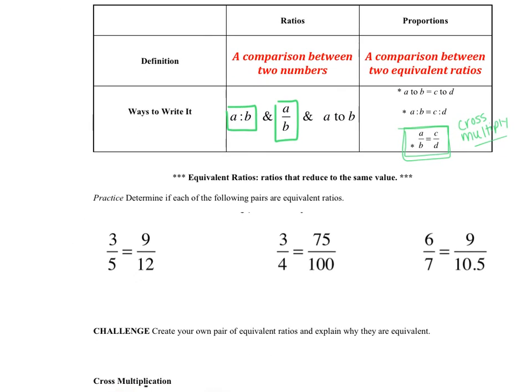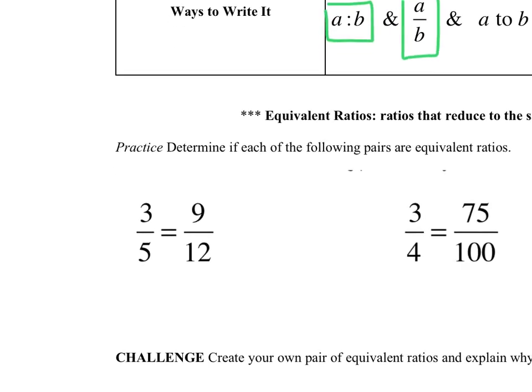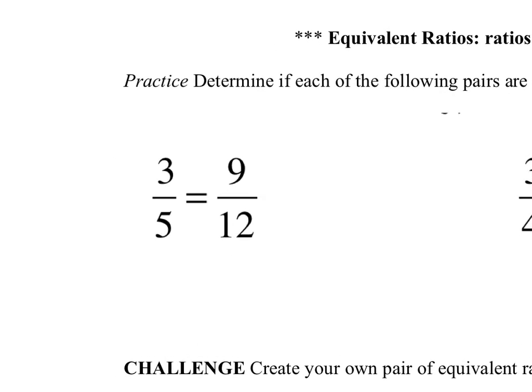So here's the first thing we're gonna do. We're gonna determine if each of the following pairs are equivalent ratios. And here's how you do it. For number one, we have 3 over 5 equals 9 over 12.